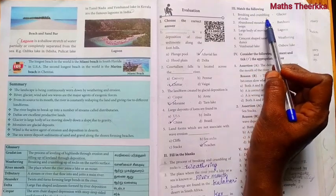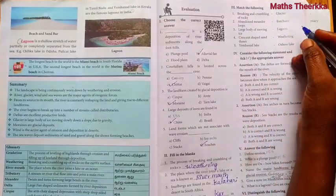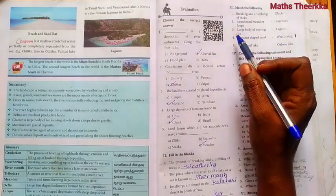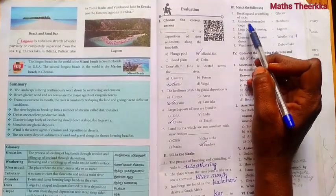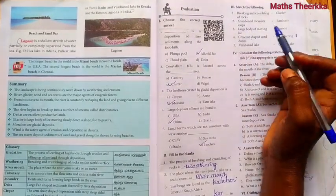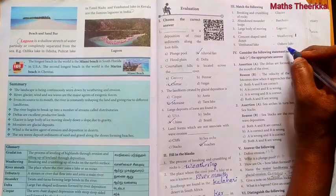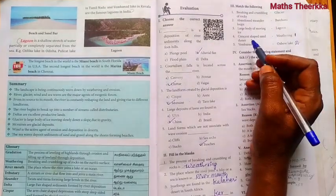Third roman, match the following. First one, breaking and crumbling of rocks, weathering. Second one, abandoned meander loops, oxbow lake.